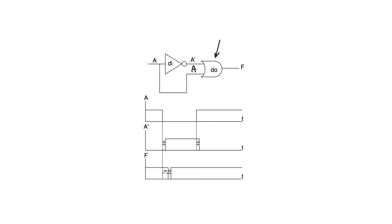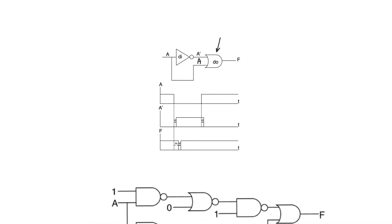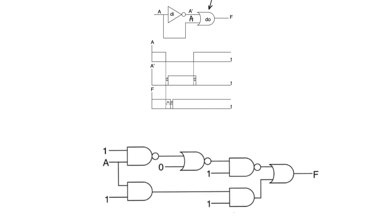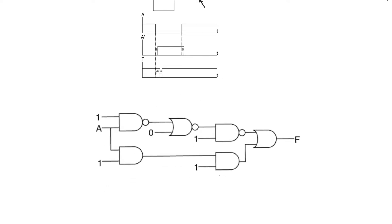This depends on the delays of the circuits and the inertial model of delay being used. When we talk about this basic form being present in the circuit, we don't mean that it explicitly exists — it could be implicitly present. For example, this circuit contains a static-one hazard basically because the variable A has two paths to the OR gate: it takes one path directly and also takes a path through the upper branch.